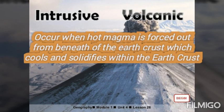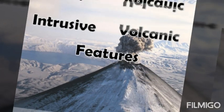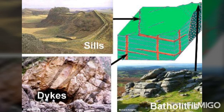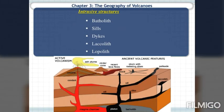The intrusive volcanic features include dikes, sills, and other features. The features formed through intrusive volcanism are called intrusive structures, which include laccoliths and lopoliths. There are two types of volcanism: active volcanism and ancient volcanism. Active volcanism is represented by the red color on the diagram.